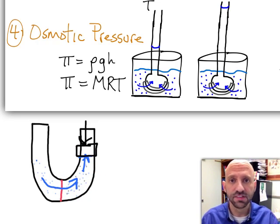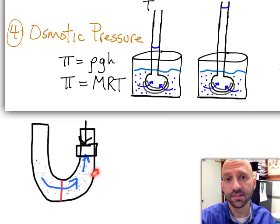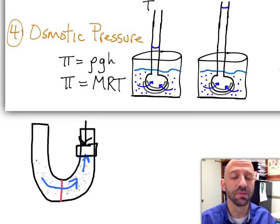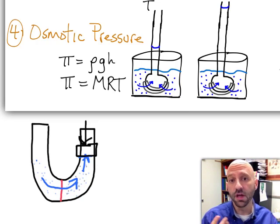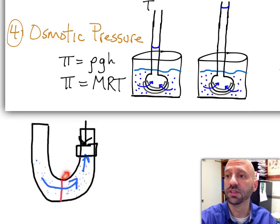Think about it. It kind of makes sense. The more concentrated this solution is on the right-hand side of the U-tube, the more water is going to want to flow from left to right. So the osmotic pressure is directly proportional to the concentration we have over here.